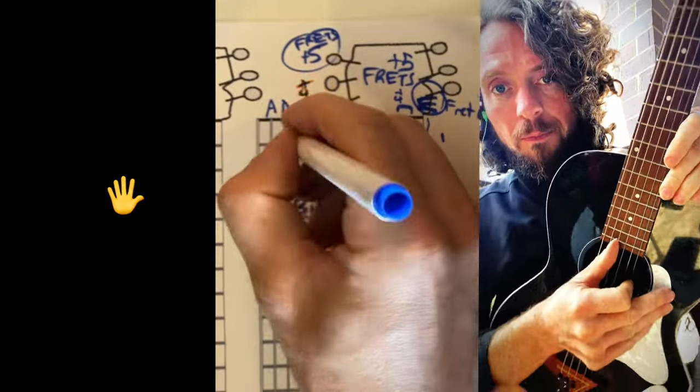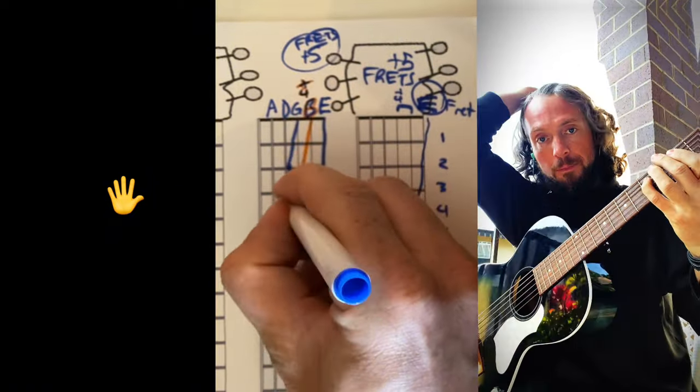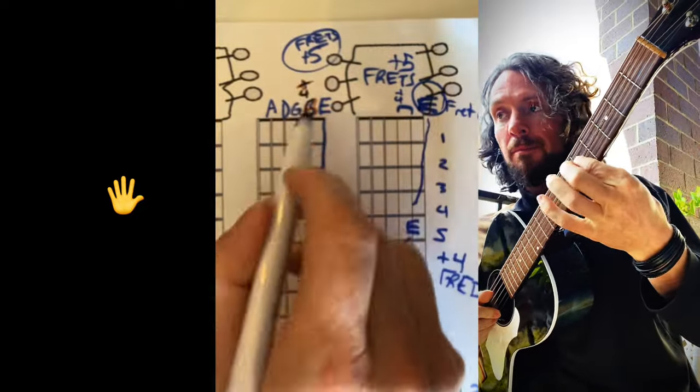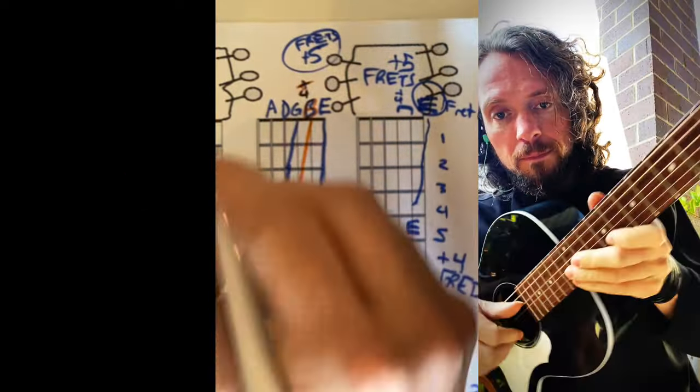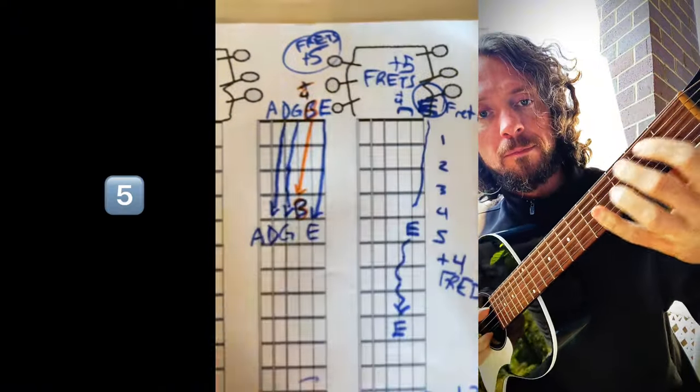String G to the next string open: one, two, three, four, five. That's our plus five. So again, these are all plus five except for the B. The D string to the next string bigger is also plus five: one, two, three, four, five. The same D.